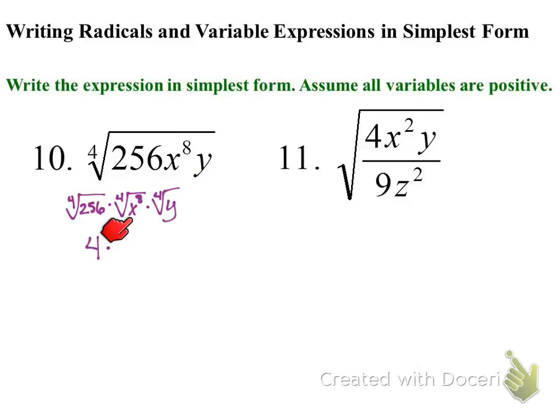4th root of 256, I think it's 4. We talked about this earlier. 4. So 4th root of x to the 8th. With that little thought of what would this look like exponentially, this becomes x squared. Final answer would be 4x squared times the 4th root of y.